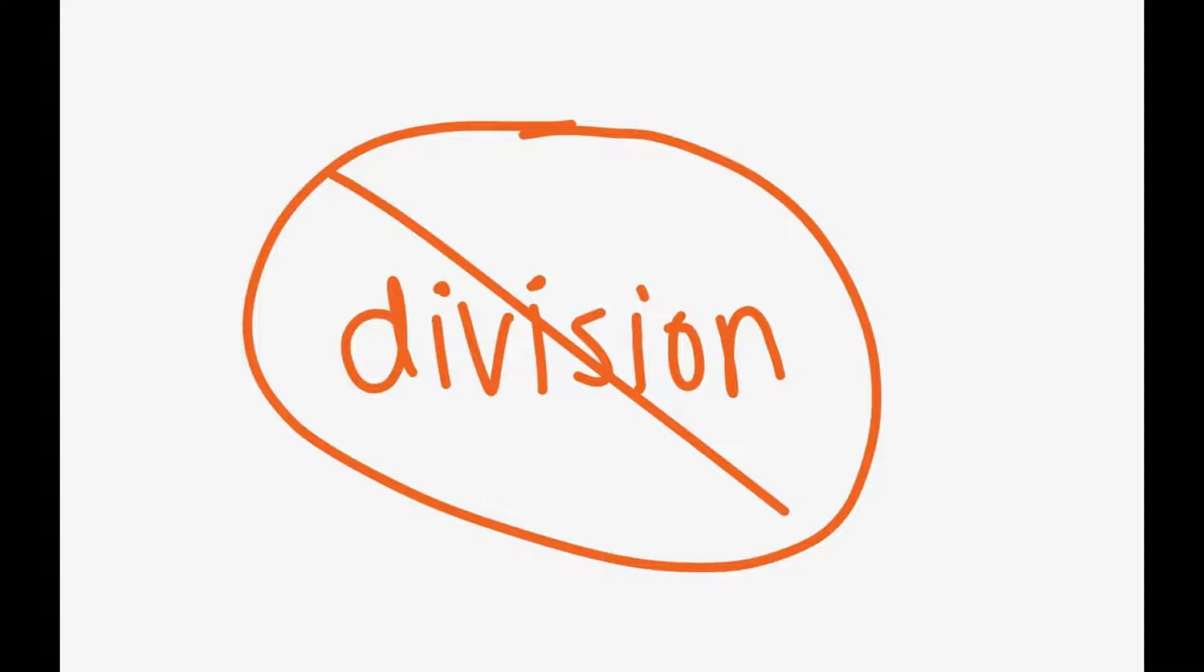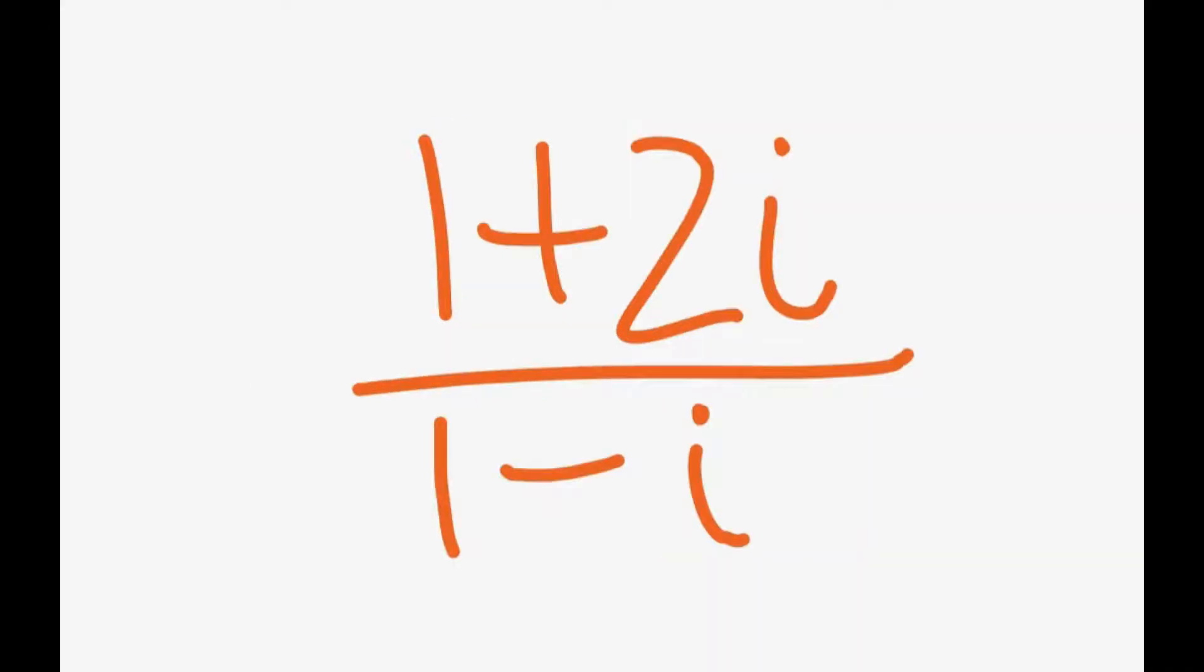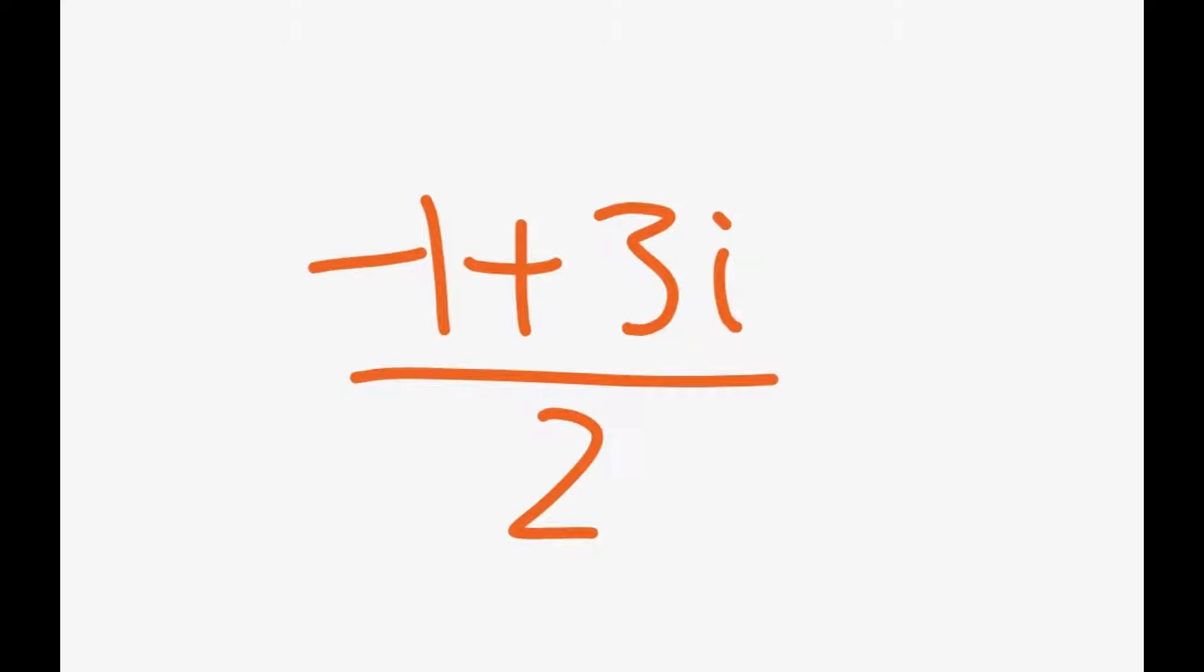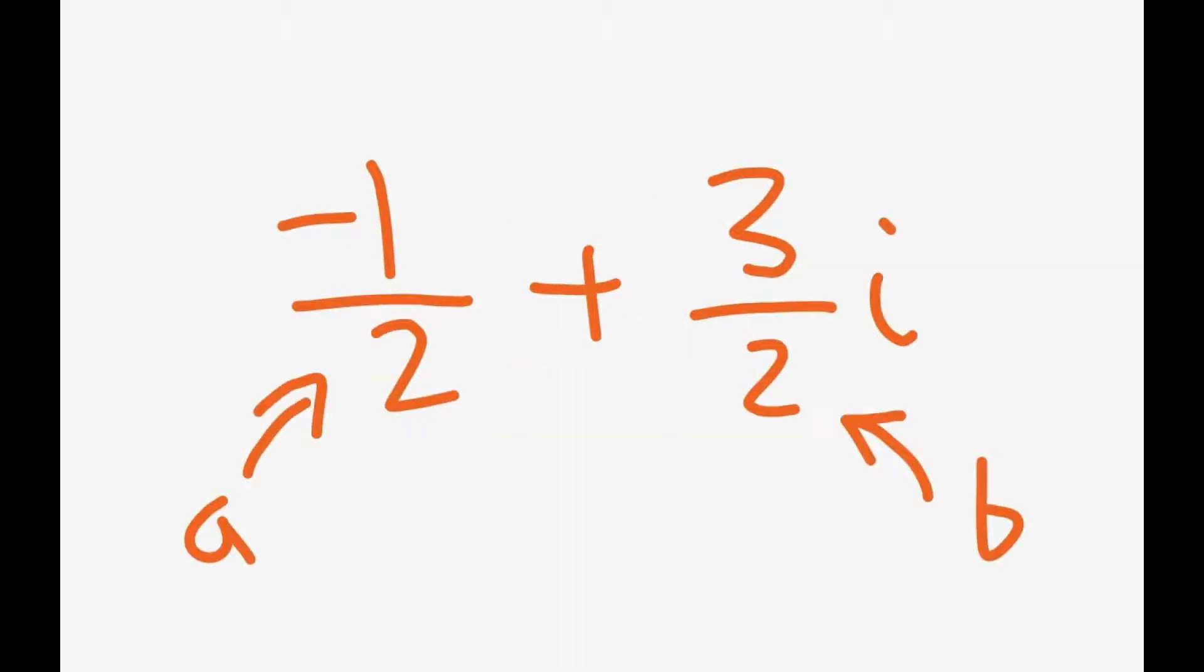Take two Gaussian integers 1 plus 2i and 1 minus i. When we divide the two numbers, we have 1 plus 2i over 1 minus i. When we multiply by the conjugate of 1 minus i to get rid of the complex number in the denominator, we get 1 plus 2i times 1 plus i times 1 plus i. When we multiply out, we get negative 1 plus 3i over 2. Because a and b are not integers, the complex number is not a Gaussian integer. It's only a complex number.